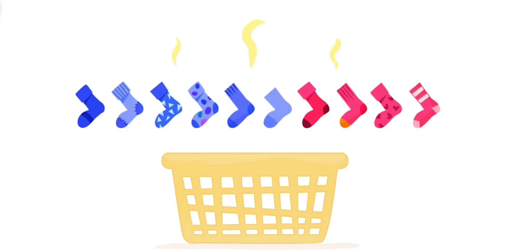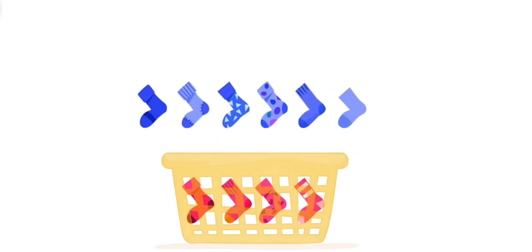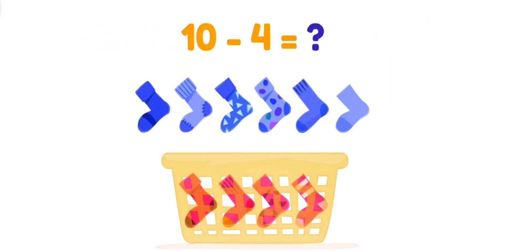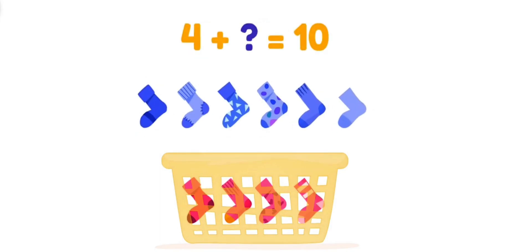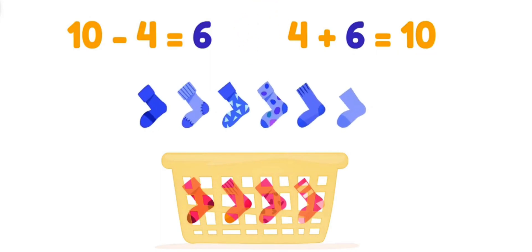There are ten dirty, stinky socks in my room! I only put four in the laundry basket! How many socks are still in my room? Here's two ways to figure it out! We can use subtraction! Ten minus four is six! Or, I can use addition! Four plus what equals ten? Four plus six equals ten! So there are still six stinky socks!